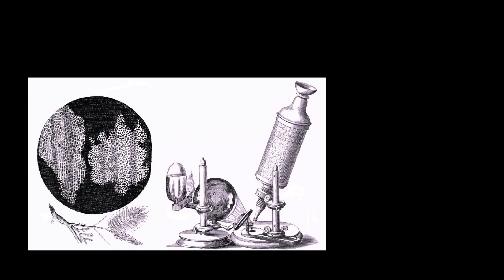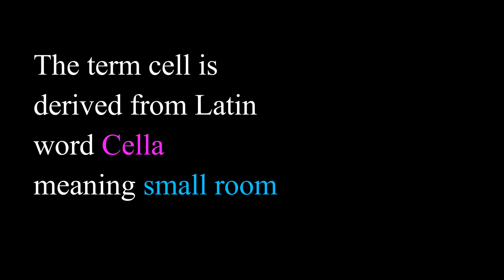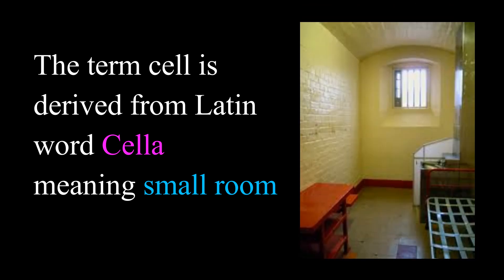The first honeycomb-like cells were observed by Robert Hooke in 1665 in a thin slice of cork by using the microscope. He coined the term cell which is derived from the Latin word cella meaning small room.